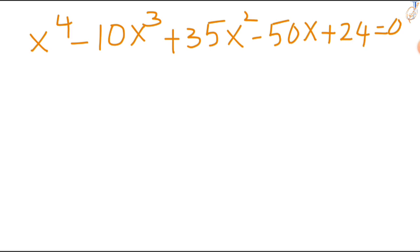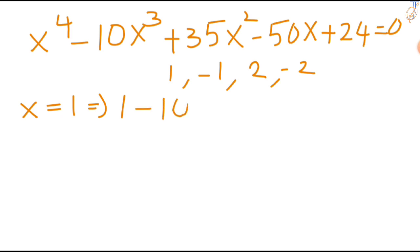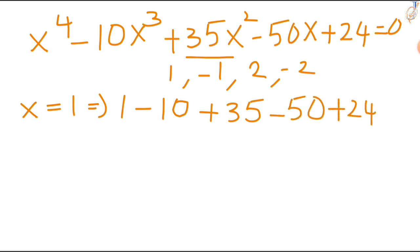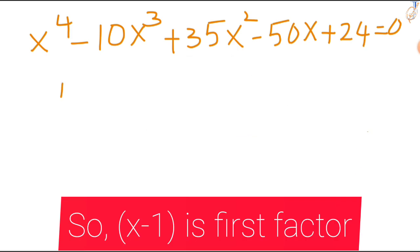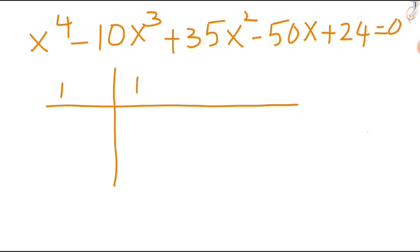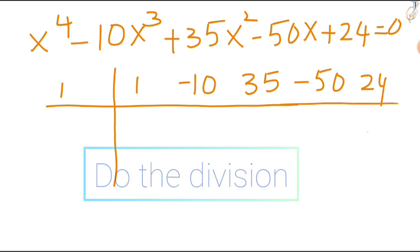Now we'll see how to solve this biquartic equation. Using the hidden trial method, find the first factor — it's mostly 1, minus 1, 2, or minus 2. Take x equal to 1 and substitute in the equation: 1 to the power 4 is 1, minus 10 times 1 cubed is minus 10, plus 35 times 1 squared is 35, minus 50, plus 24. Computing: minus 10 minus 50 gives minus 60, and 1 plus 35 plus 24 gives 60. So 60 minus 60 is 0. So take this and write all the coefficients: x⁴ coefficient is 1, x³ coefficient is minus 10, x² coefficient is 35, x coefficient is minus 50, and constant value is 24. Now do the division.